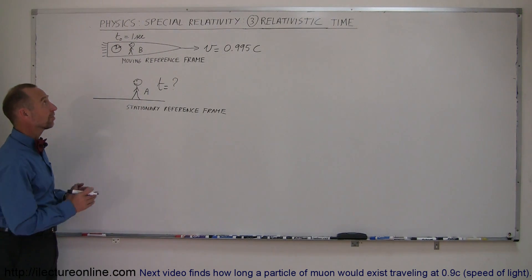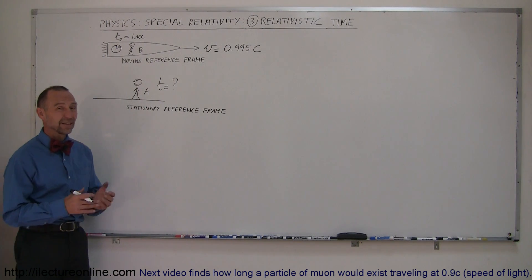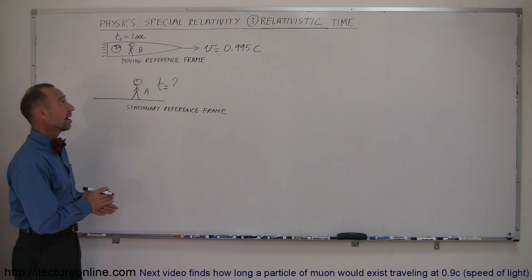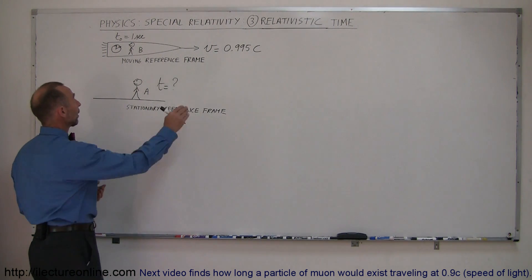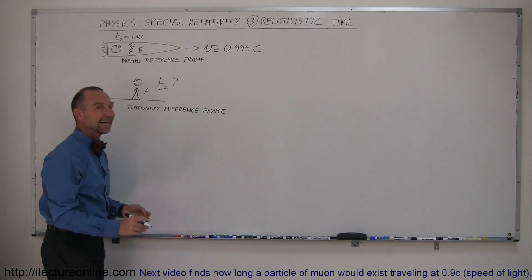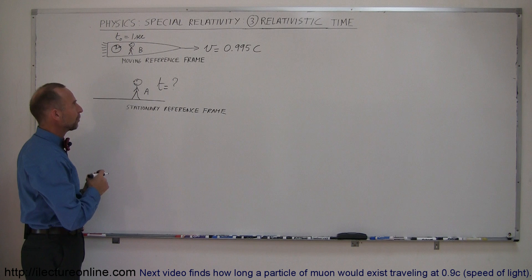In our third example, we're going to look at how special relativity, when things move really fast, affects time. So now we're talking about relativistic time. The situation here is we have a space rocket traveling very fast at 0.995C, 99.5% of the speed of light.